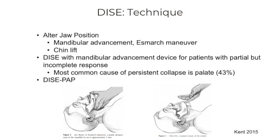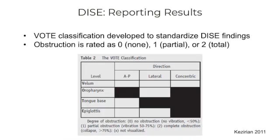There are also people doing DICE-PAP, where during DICE you put the PAP on and look through one of the bronchoscopy adapters. This is primarily for folks still having residual OSA with PAP, to see where the obstruction is happening and guide further treatments. We use the VOTE classification for standard reporting of DICE results, which stands for Velum, Oropharynx lateral wall, Tongue base, and Epiglottis. You rate each area along with the direction of obstruction — AP, lateral, or concentric — and give it a zero for no obstruction, one for partial, or two for total obstruction. Most everyone doing adult DICE uses this, which is nice for standardized reporting.